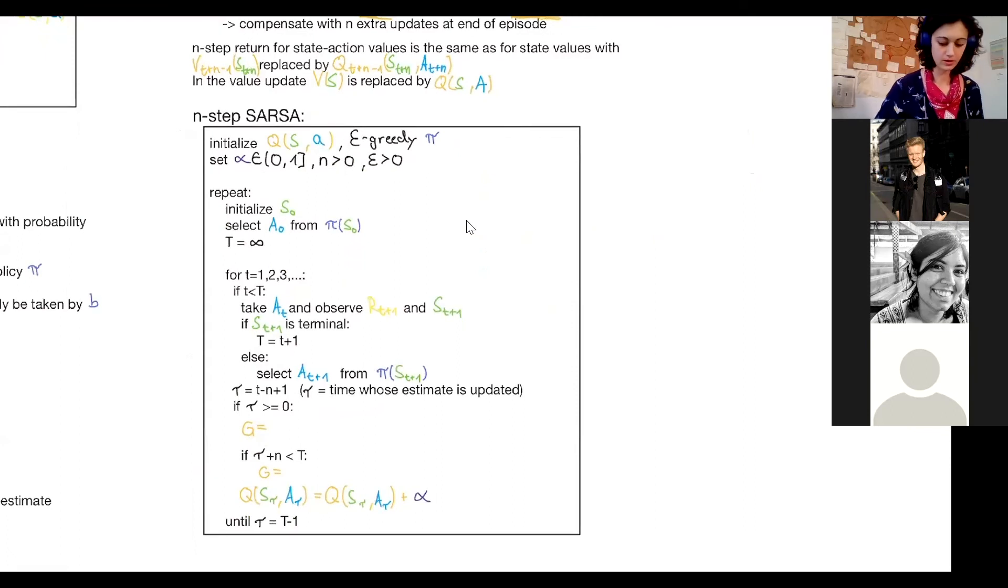And then of course we can do the same thing with Q values, just replacing the V values with Q values and adding action in there. Let's do a pseudo code and that's the last thing we'll do before the break. So we initialize that. This is n-step SARSA. Of course the same thing can be done for other things like n-step Q learning, and other variations and n-step expected SARSA and so on.